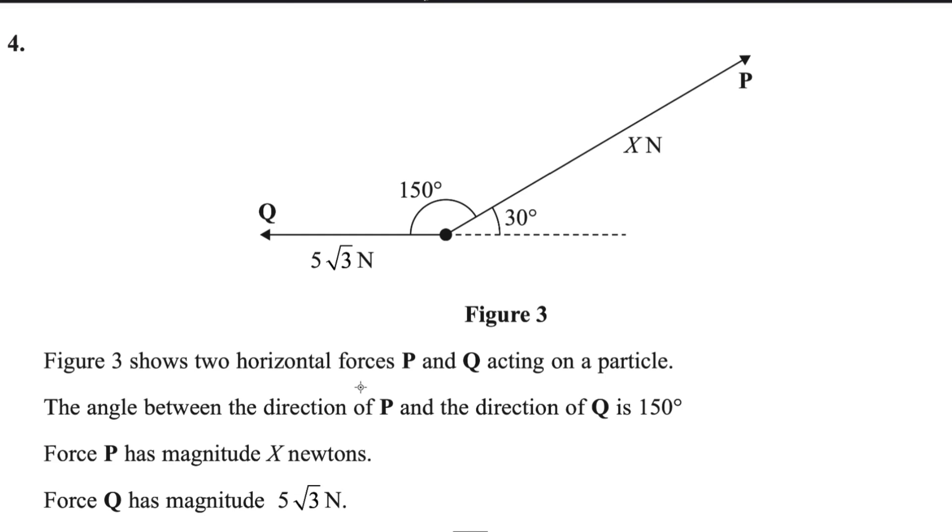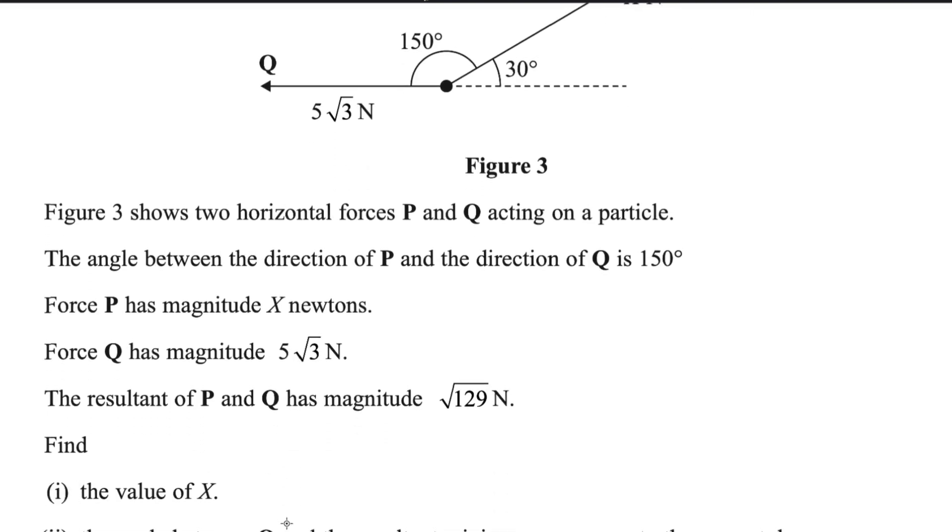Figure 3 shows two horizontal forces P and Q acting on a particle. The angle between the direction of P and direction of Q is 150 degrees. It is given in the diagram. Force P has magnitude X newtons and force Q has magnitude 5 root 3. The resultant of P and Q has magnitude root 129.